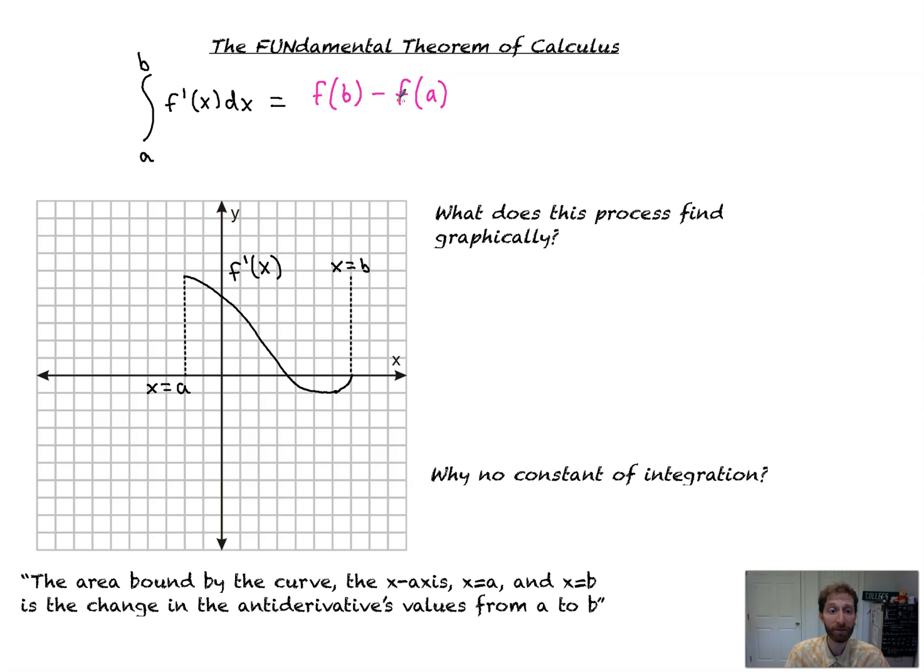This finds the net signed area. What does the process find graphically? The net signed area. So what that means is all of this plus all of that, and that would be negative right there.